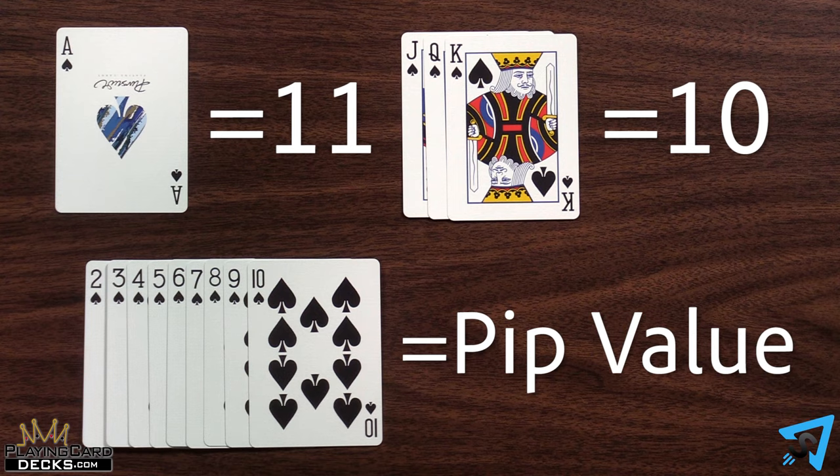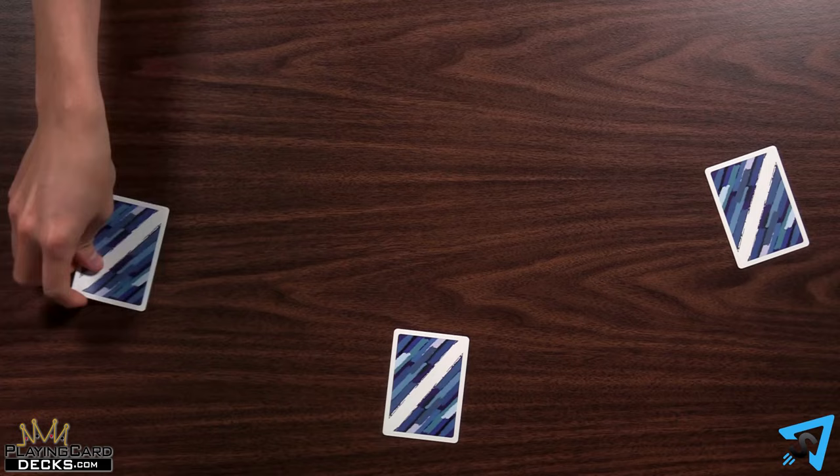Pick a dealer who shuffles a standard 52-card deck of playing cards and deals 3 cards to each player. Players look at their own hand, but keep them hidden from their opponents.